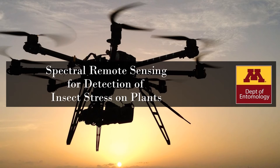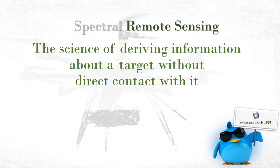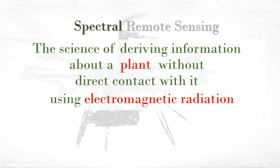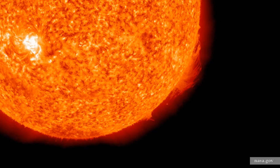Hello and welcome to this introduction to the use of spectral remote sensing for detection of insect stress. Remote sensing relates to the science of deriving information about the target without direct contact with it. In entomology, the target is a host plant, and the spectral relates to the use of electromagnetic radiation.